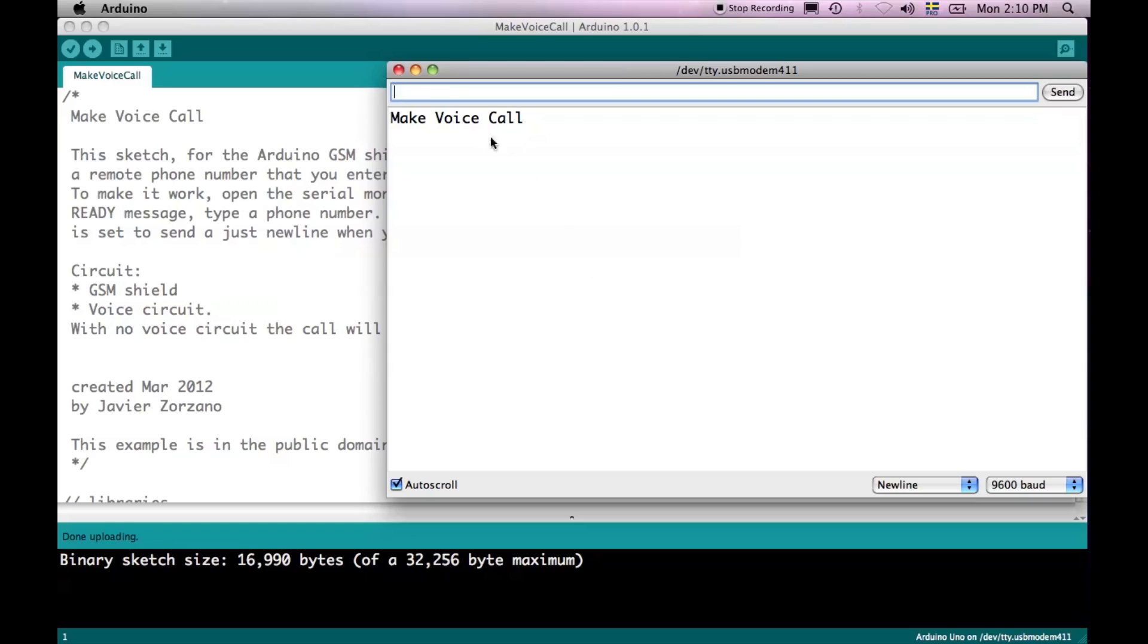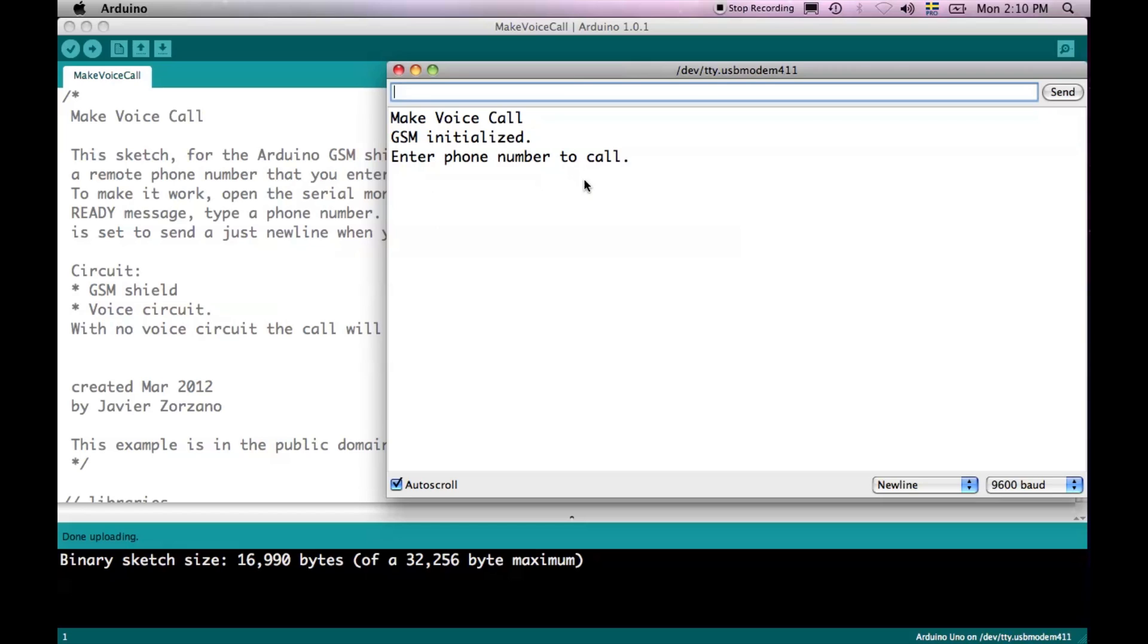For the first minute or so, the shield is going to be connecting to the GSM network, so you need to wait before you will get any other requests from it. Now, the GSM network has been initialized, and we get the chance to start typing a phone number we want to call to.